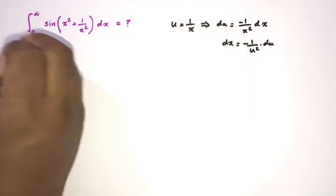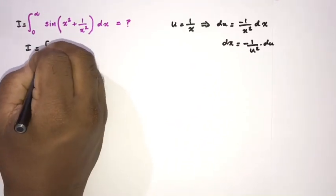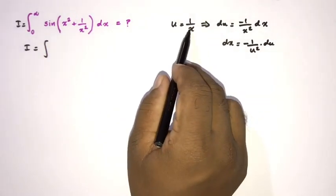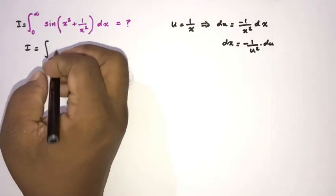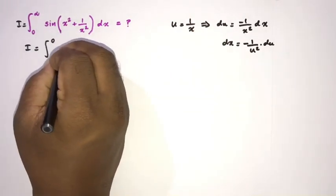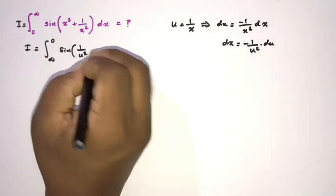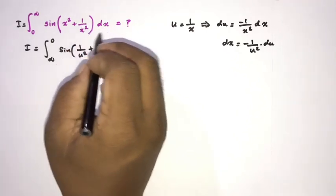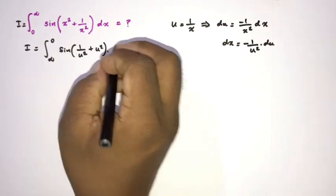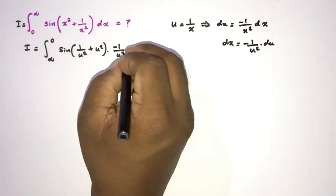Now we plug into the integral I. We change the boundaries: when x approaches 0, u approaches infinity; when x approaches infinity, u approaches 0. The integrand becomes sine of (1/u² + u²), and dx = −(1/u²) du.